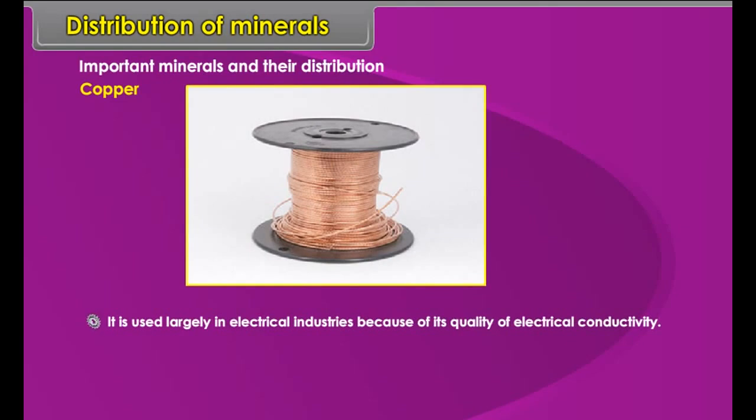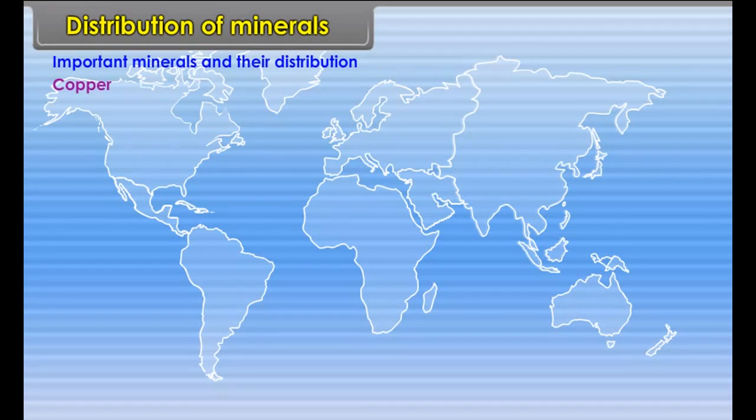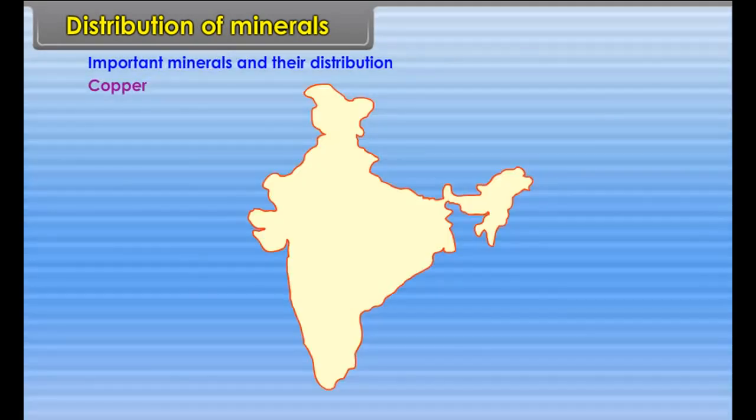Copper is used largely in electrical industries because of its quality of electrical conductivity. Location: Chile, USA, Canada, Poland, Russia, Georgia, Armenia, Congo and Zambia. In India: Jharkhand and Rajasthan.